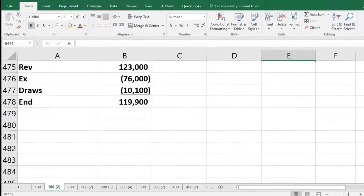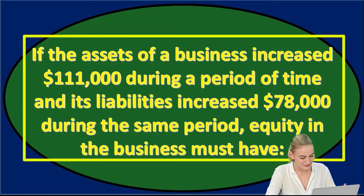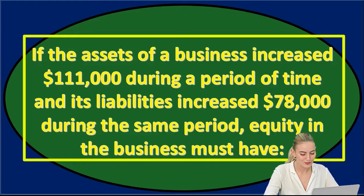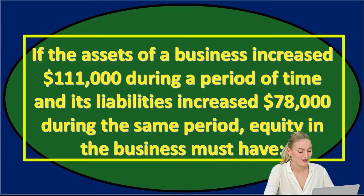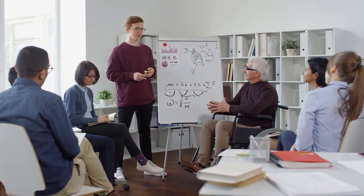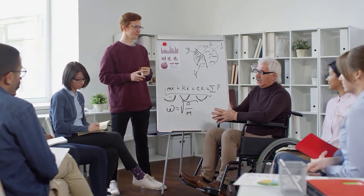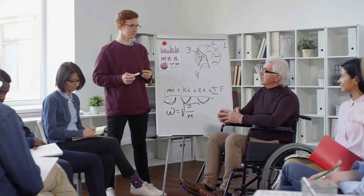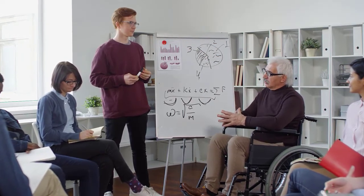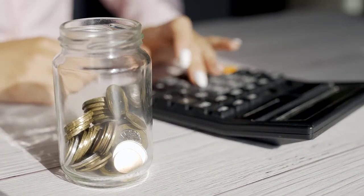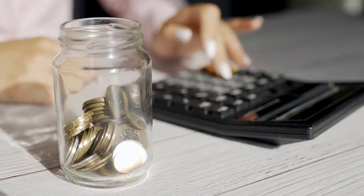Next question: if the assets of a business increased $111,000 during a period of time and its liabilities increased by $78,000 during the same period, what must have happened to equity? This is going to be an accounting equation problem. It's a little tricky because we're talking about a time period rather than a point in time, but it's similar to recording a transaction — we're looking at what happened over a certain time period in aggregate on the entire accounting equation. Therefore, we can use the accounting equation to calculate.